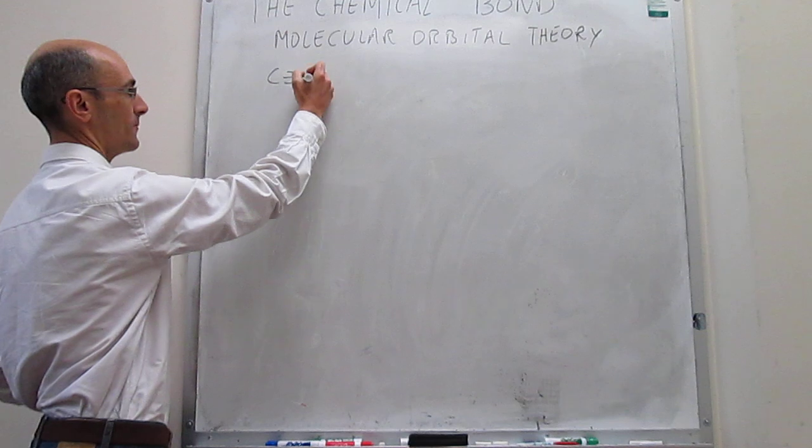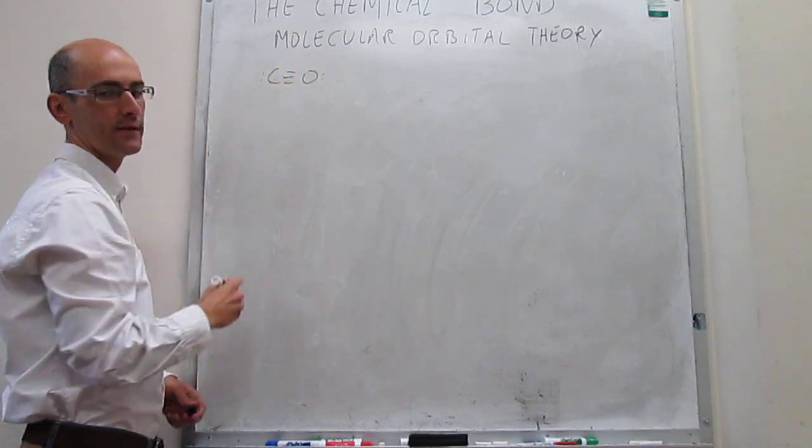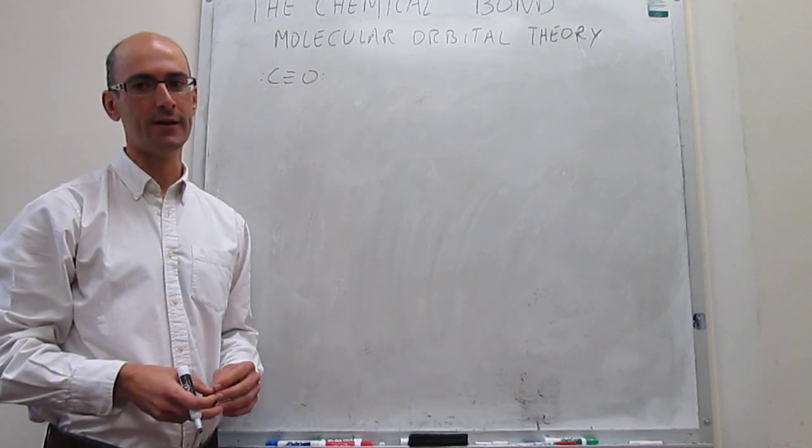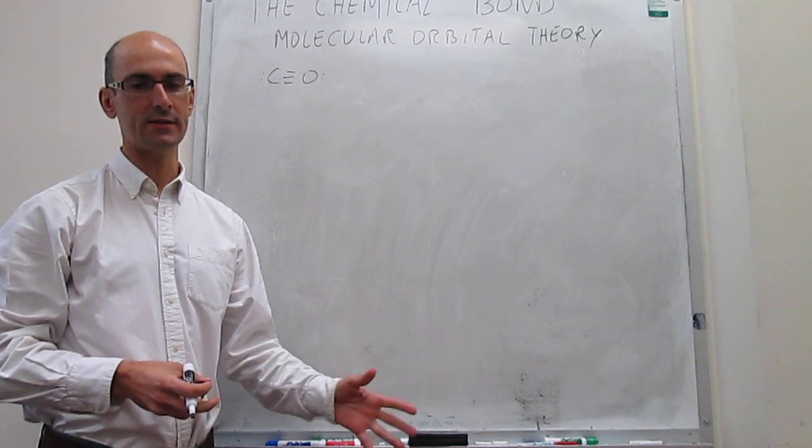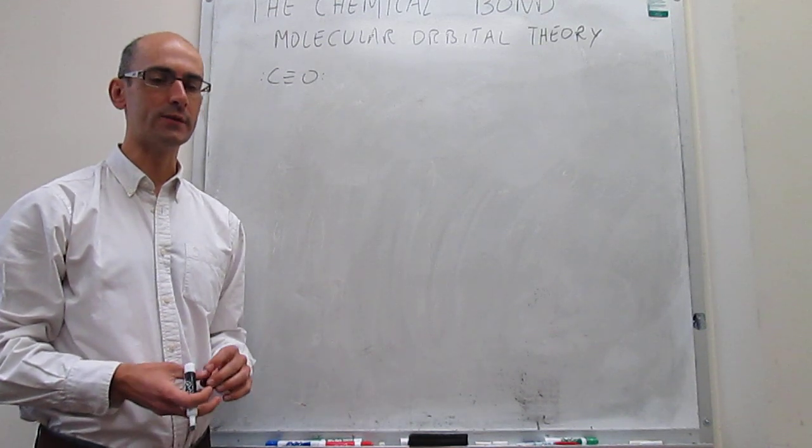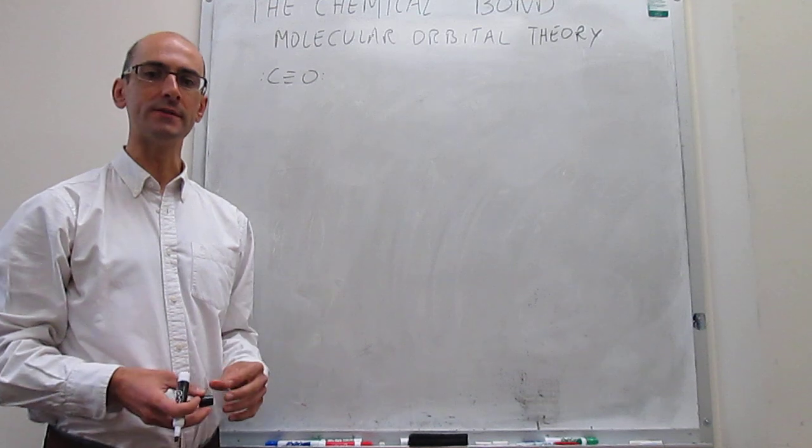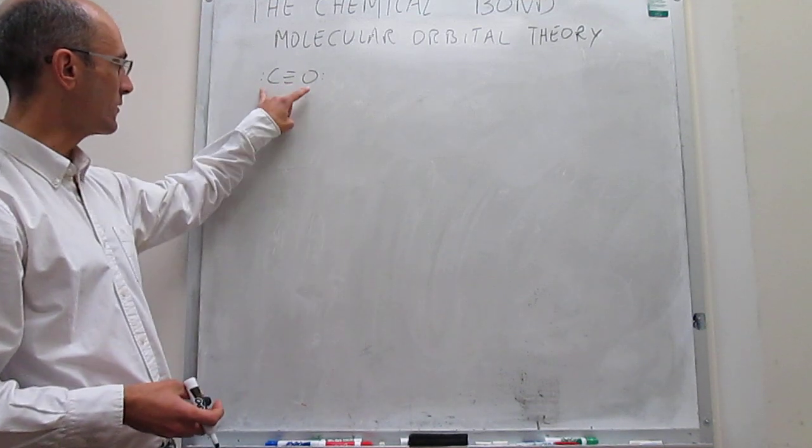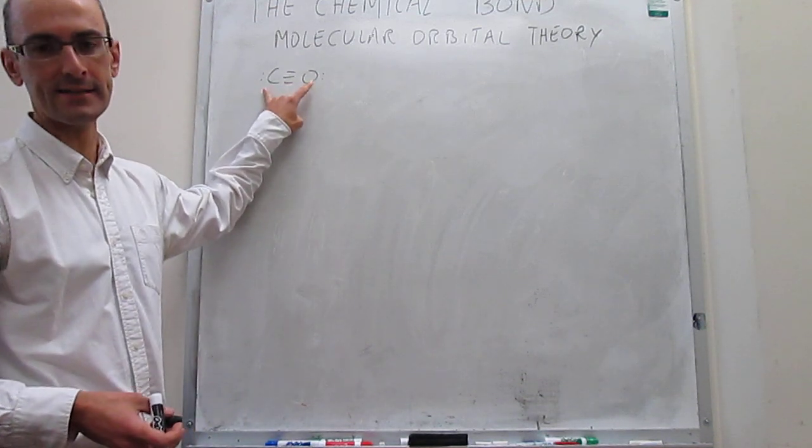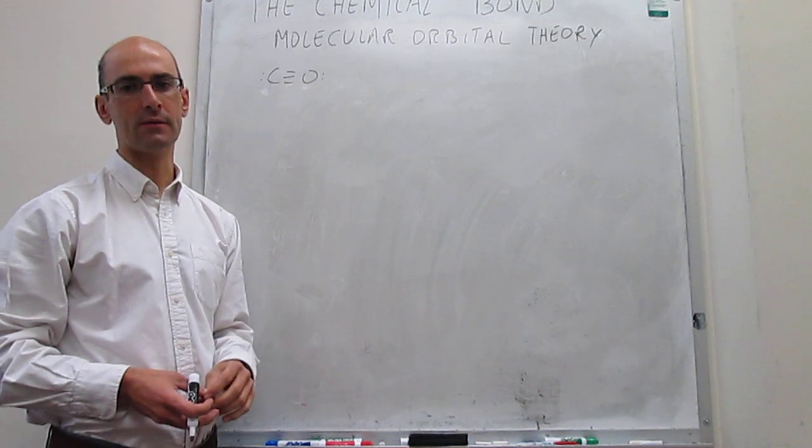The idea is that until now we have been drawing the MO diagrams for homonuclear diatomic molecules like C2, N2, O2, and so forth, but there are some interesting differences when you actually consider two different atoms. This is still a diatomic molecule, but it has two different atoms.